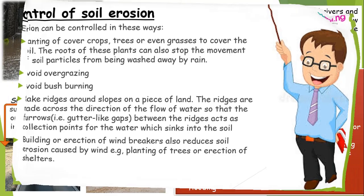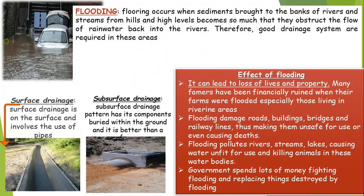Now let's go to flooding. Flooding occurs when sediments, refuse such as plastics, wood, and other debris are dumped carelessly. This causes flooding when they block the flow of water from the rivers.